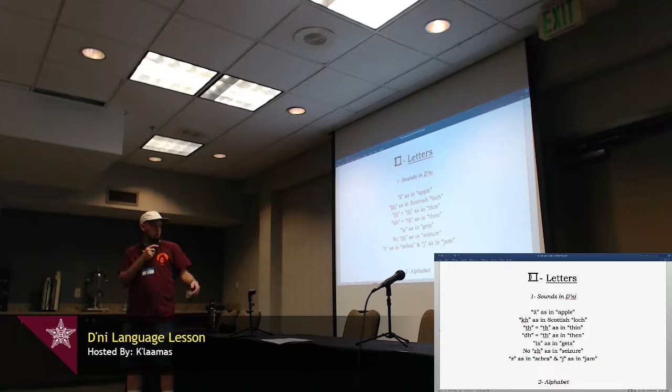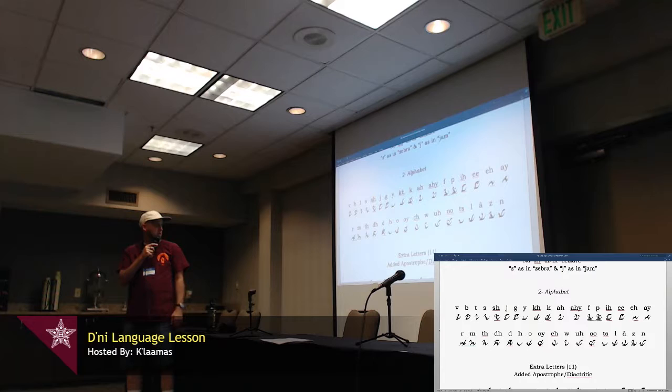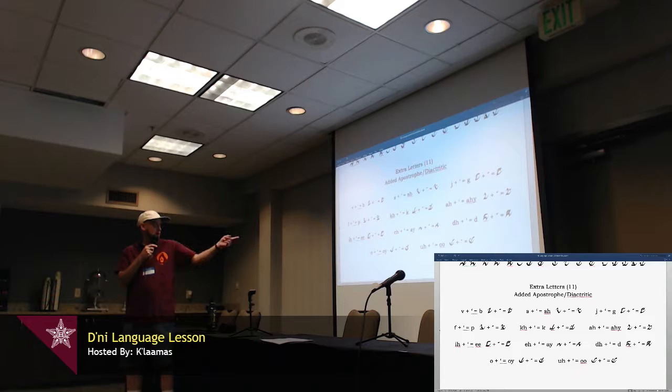And then the alphabet itself is basically a cursive version of the numbers. It takes a bit of getting used to, and you have to make sure your handwriting is good, because they'll blur together otherwise. But you just connect it all together with more looping, curving strokes, and you get the alphabet. There are a few extra letters. There's more than 25 letters, and they just take the apostrophe and use it as a diacritic to mark. So, you add that to some of the normal letters, and you get the extra letters. About 11 of those.